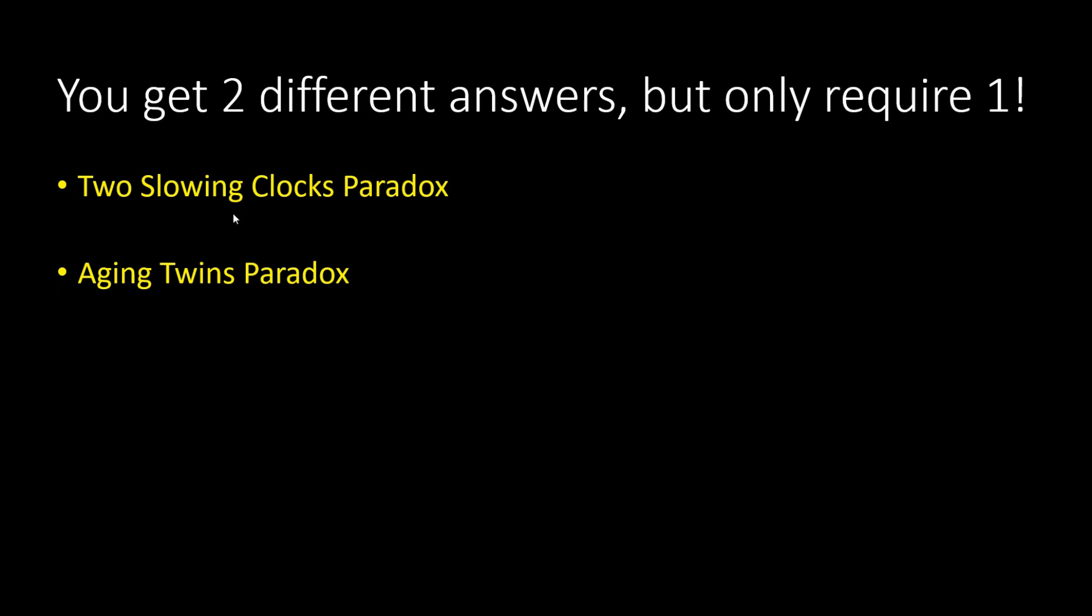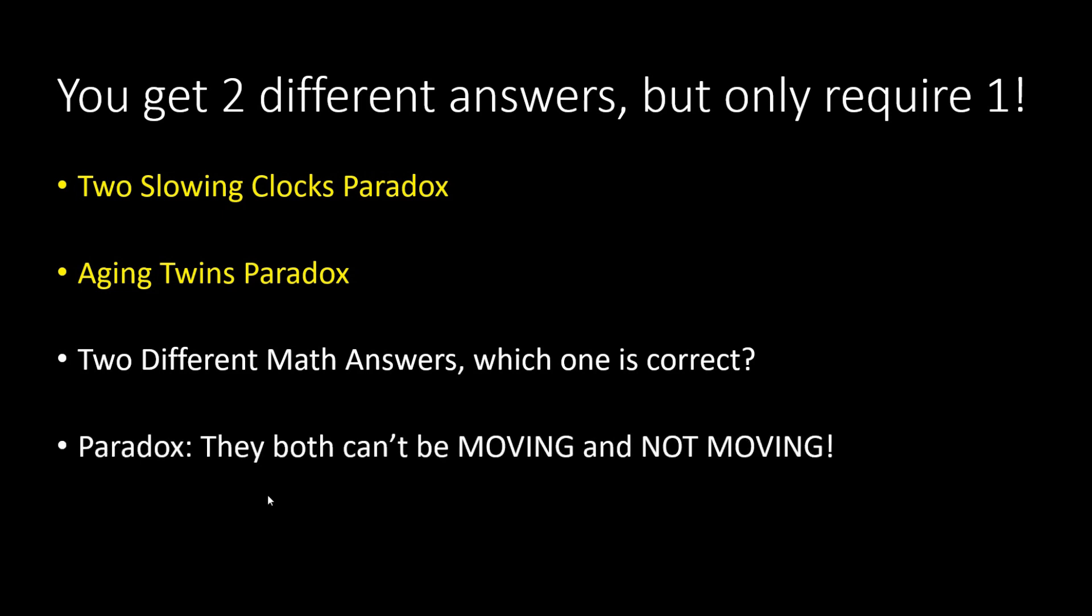So you get the two slowing clock paradox or the aging twins issue. And now you know that it gives you two different answers, but doesn't tell you which one is correct. So in special relativity, you can't have each frame claiming that they're moving and not moving. It just doesn't work. It is absolutely a logical contradiction or paradox. It has not been resolved.